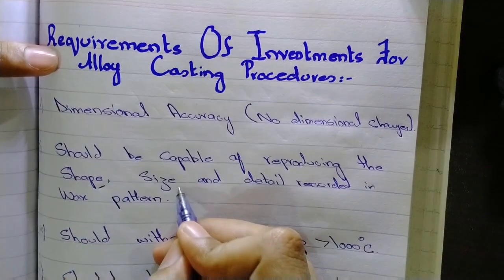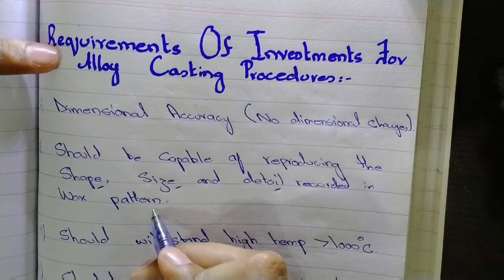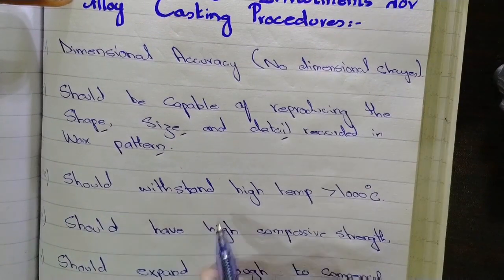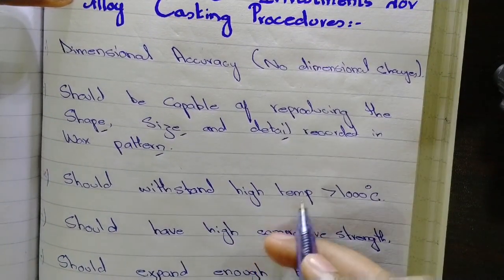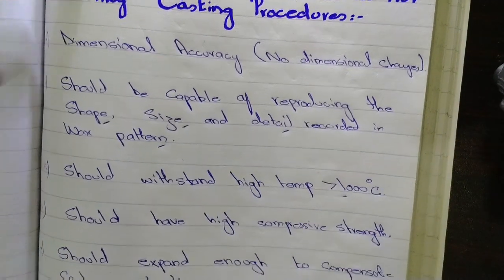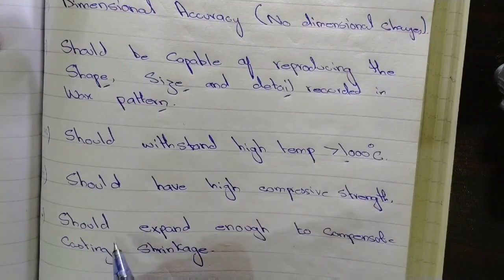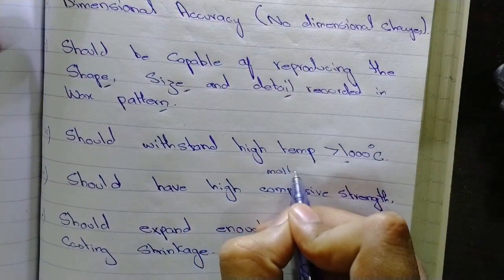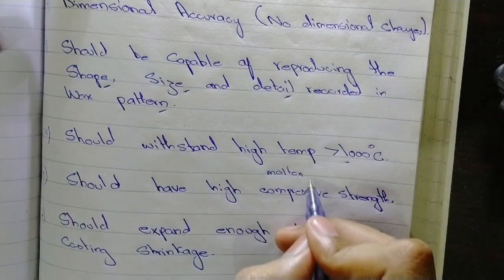The investment material should withstand high temperatures, more than 1000 degrees Celsius. Investment materials should have high compressive strength because the molten alloy puts compressive forces onto the investment material.